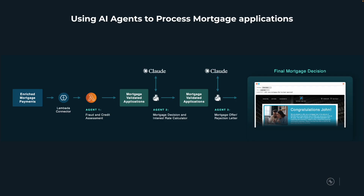The output of agent one is consumed by agent two, which makes the actual mortgage decision and recommends an interest rate. Agent two runs entirely on Flink SQL in Confluent Cloud. The output of agent two is then consumed by agent three, which decides whether to generate a mortgage offer or a rejection letter. At the end, you get a final mortgage decision.